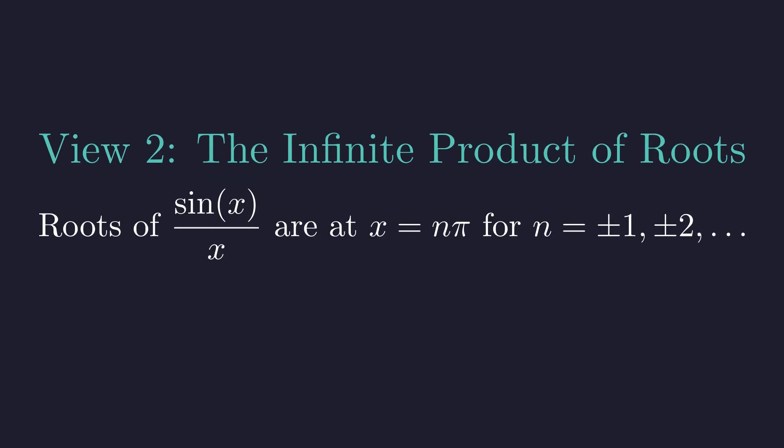Sine of x equals zero at every integer multiple of pi. We exclude x equals zero, because at that point, sine of x over x actually equals one, not zero.